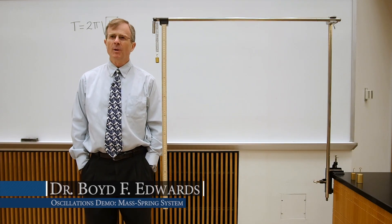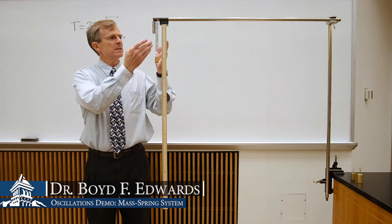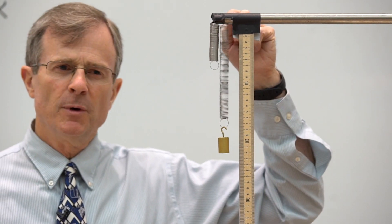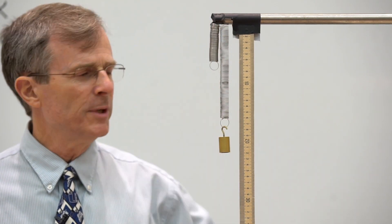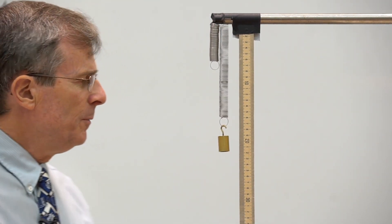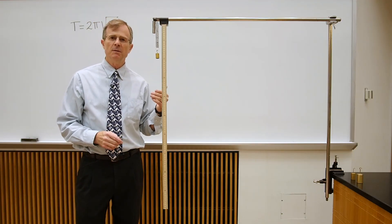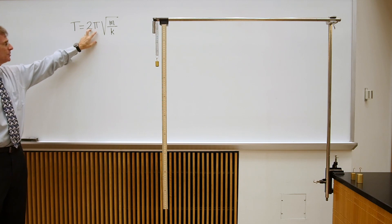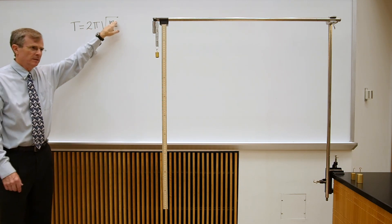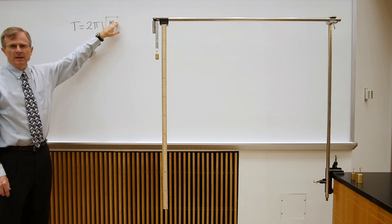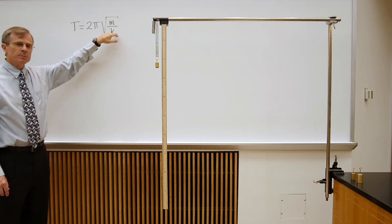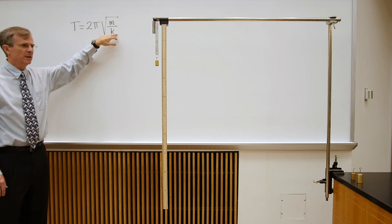I want to illustrate simple harmonic motion using a mass-spring system. We're suspending the mass from the spring, and the other end of the spring is attached to a fixed rigid object. The period of the motion is the time required for one oscillation — the time between booms — and that's denoted by T in this equation. It's 2π times the square root of the mass divided by the spring constant k, which is related to Hooke's Law.